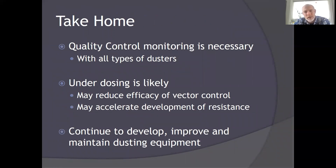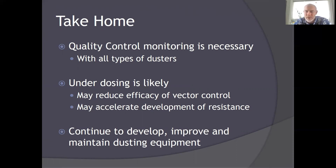From all the work we've done dusting over the years, there are a few simple take-home messages. Quantity and quality control monitoring is absolutely necessary. Regardless of what type of duster you're using, it's really important to measure and weigh the dust going into the units and keep track of how many burrows are being dusted so you can quickly calculate whether you're achieving your grams-per-burrow target. If you don't do that, underdosing is likely — almost a certainty — and underdosing will reduce efficacy of vector control and may accelerate the development of insecticide resistance in the flea population. We need to continue to develop, improve, and maintain our equipment to be more effective and efficient.